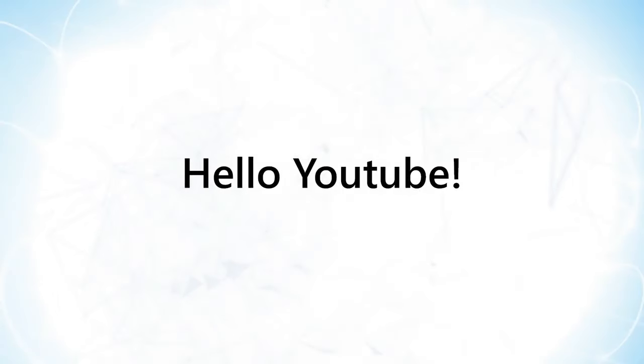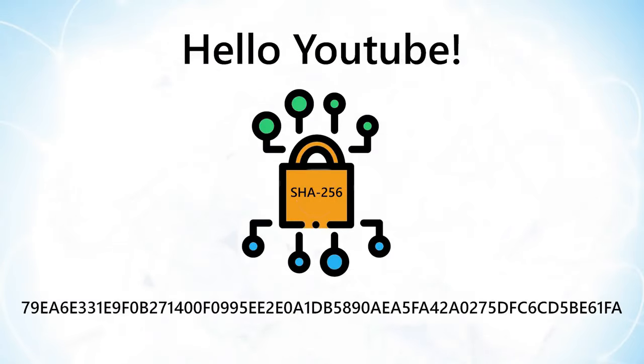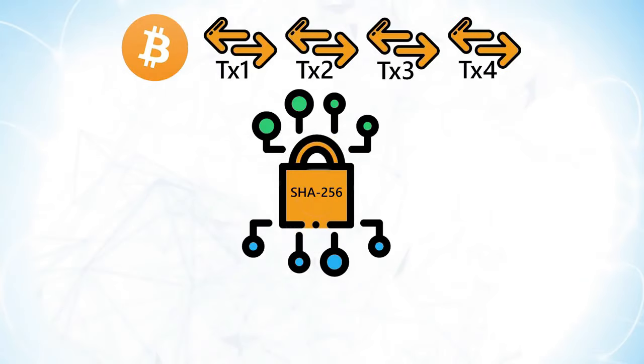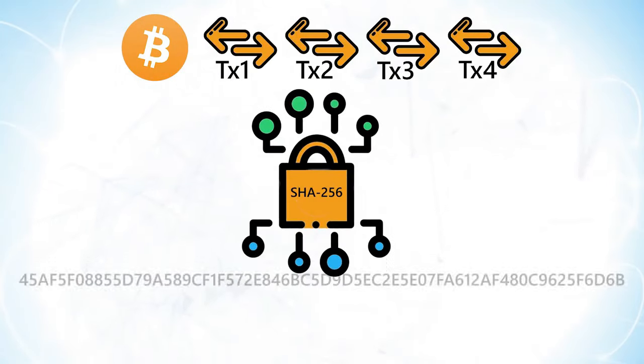In simple terms, hashing means taking an input of any length and returning an output of fixed length. In the context of cryptocurrencies like Bitcoin, transactions are taken as an input and run through a hashing algorithm that returns an output of a fixed length.